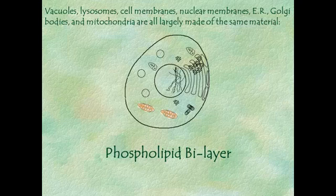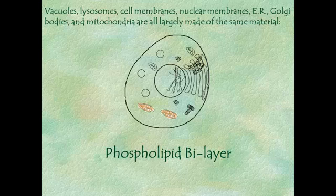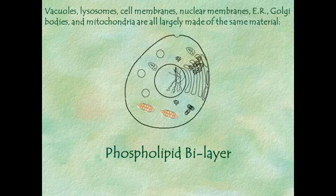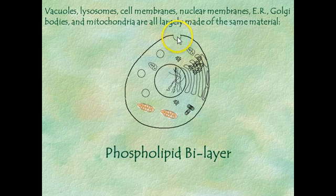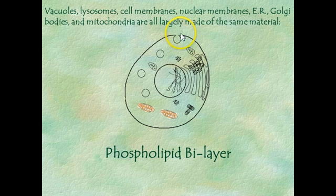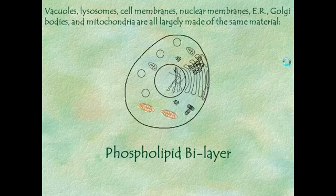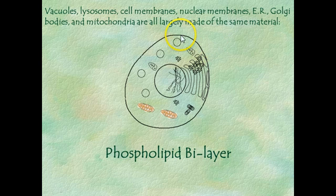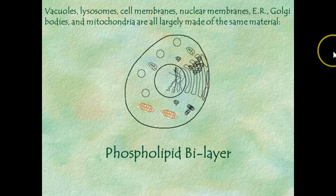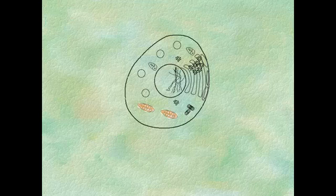Exocytosis is one of the ways cells get rid of waste or products they make. The reverse process can also happen — that's called endocytosis. If there is a food particle outside that the cell wants to bring inside, the process reverses: the cell membrane forms a little pocket or pouch that pinches off and closes, bringing whatever was outside the cell inside in its own little container. We'll have a little bit more to say about that later next week.